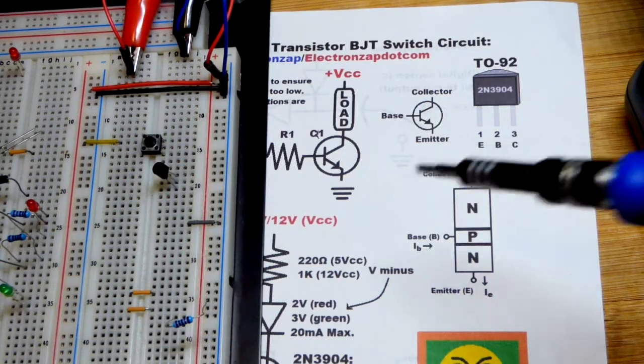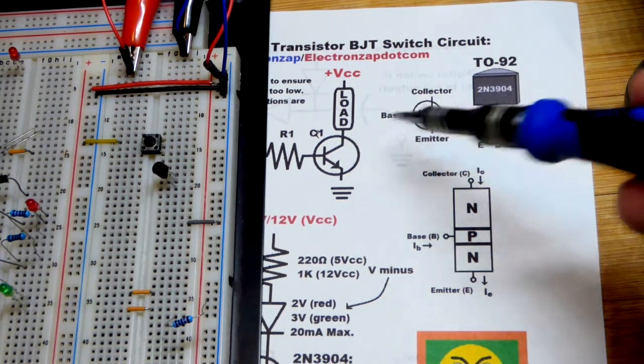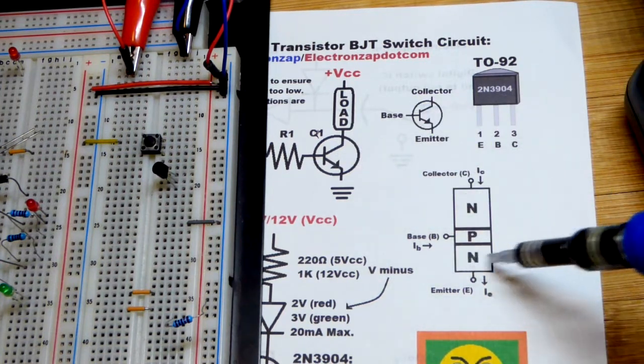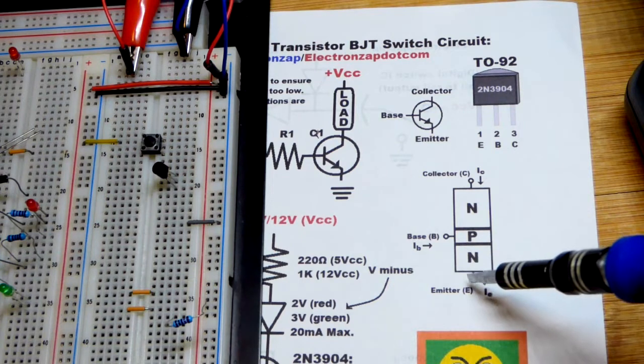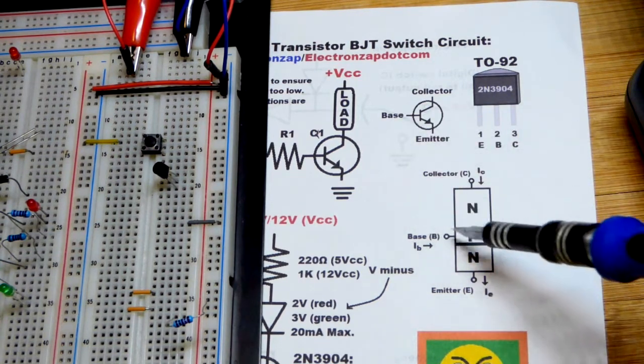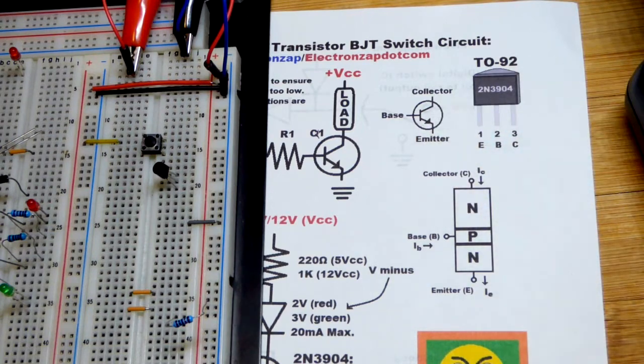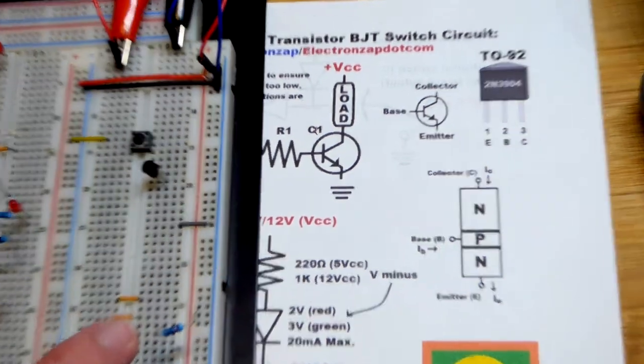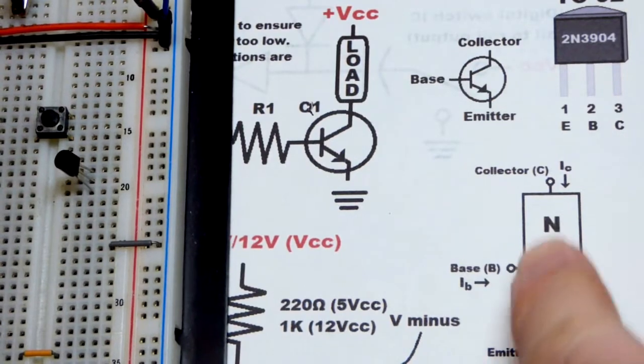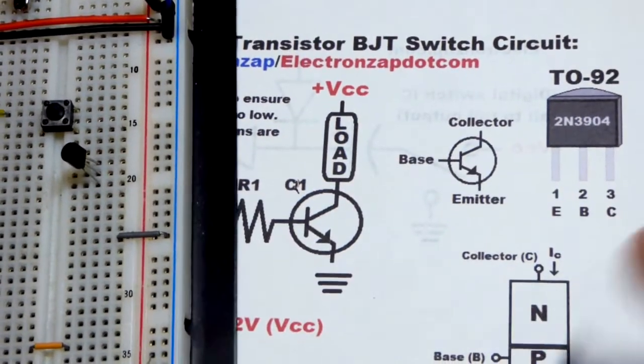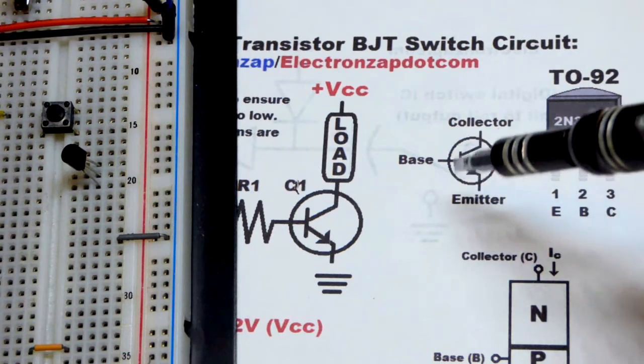The transistor we're using, this is the schematic symbol for an NPN bipolar junction transistor. That's their chemical makeup. The base is this middle area, and then one side is the emitter and the other side is the collector. When you look at the schematic symbol, you can tell which one is which.